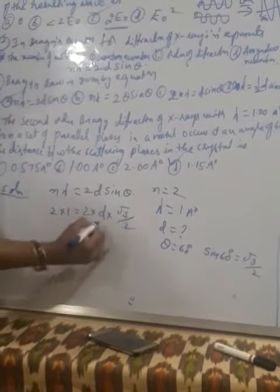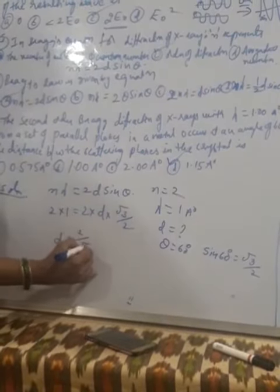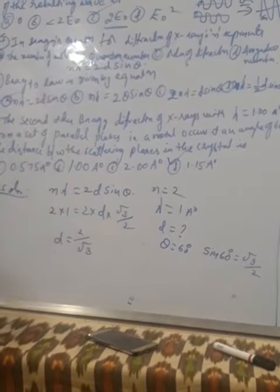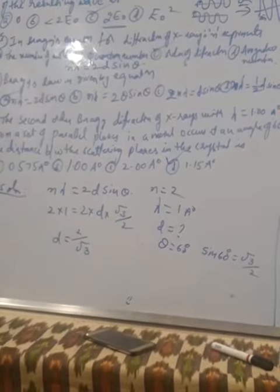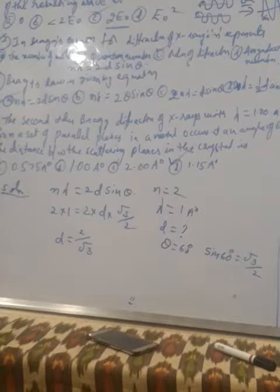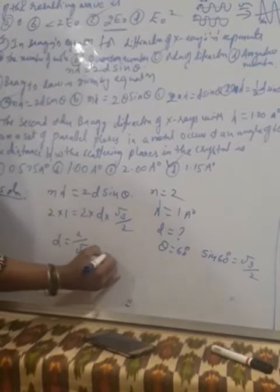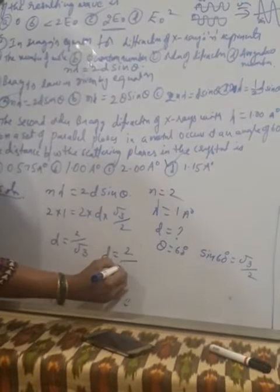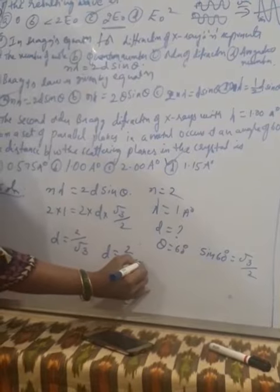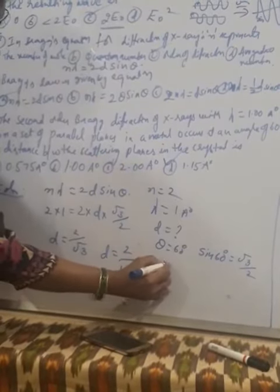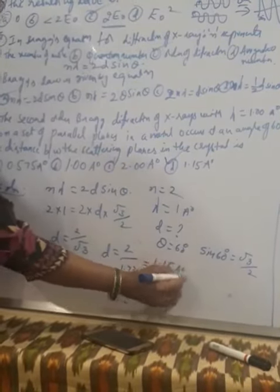D is equal to 2 by root 3. So root 3 value is equal to 1.732. So D is equal to 2 by 1.732.